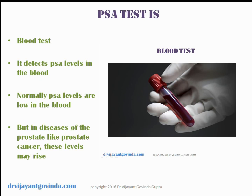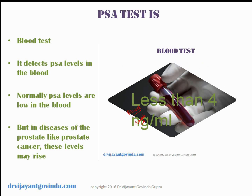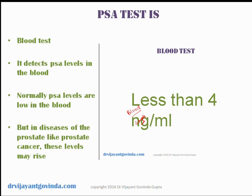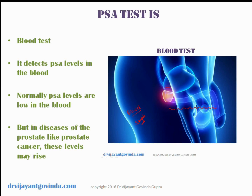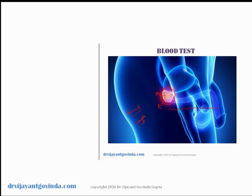What is a PSA test? A PSA test is a blood test. Some blood is drawn and in the blood sample we detect PSA levels. Normally, all the PSA produced in the prostate will be ejaculated out and a very small amount of PSA is actually left in the blood. But in diseases of the prostate like prostate cancer, these levels may rise because PSA gets leaked into the bloodstream.